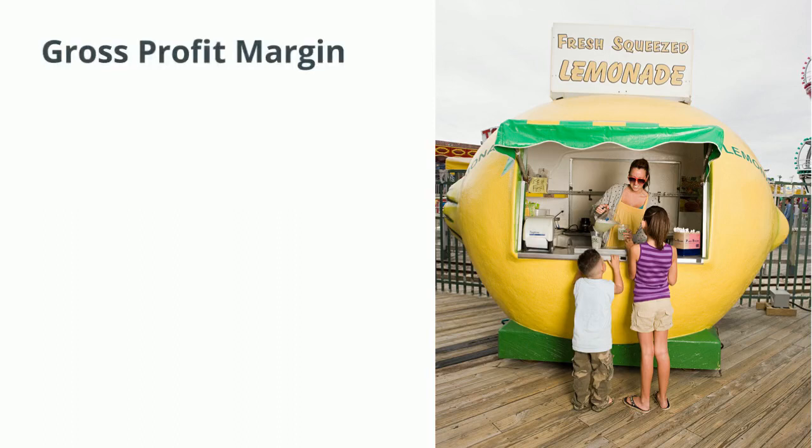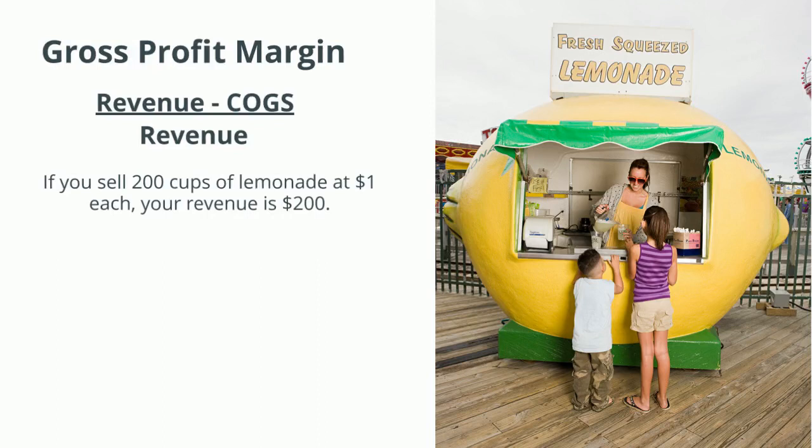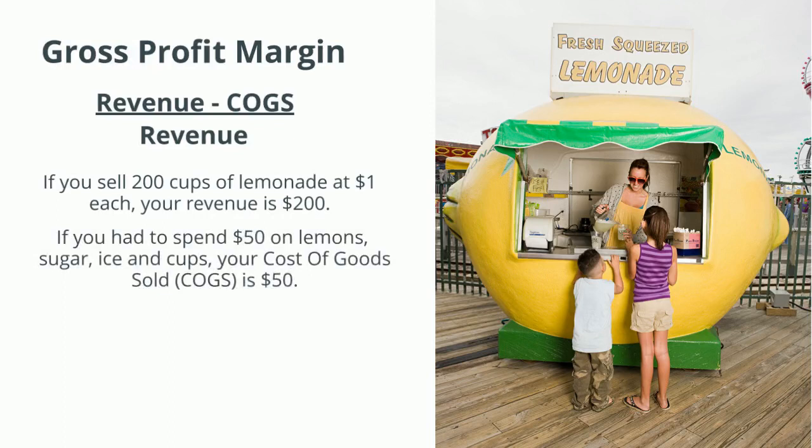Let's start with the gross profit margin, measured as revenue minus cost of goods sold over revenue. Suppose you have a lemonade stand and you sell 200 cups at a dollar each — revenue is $200. If you spent $50 on lemons, sugar, ice, and cups, your cost of goods sold is $50. $200 minus $50 equals $150, and $150 over $200 is 75%. Your gross margin is 75%.